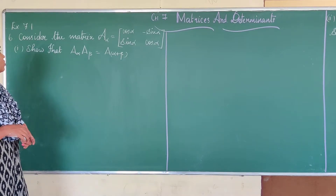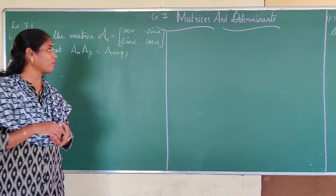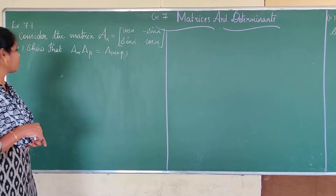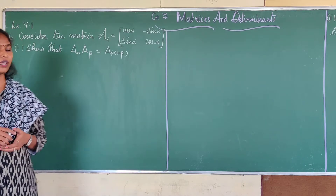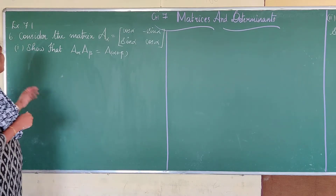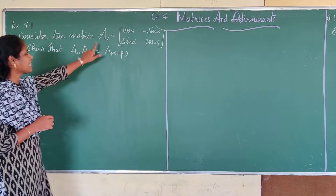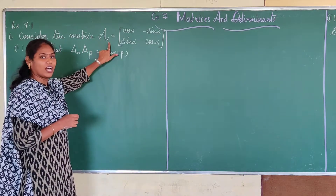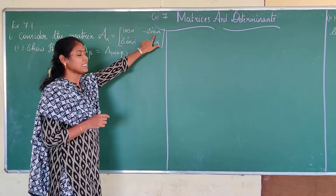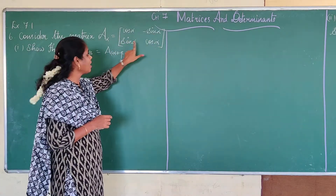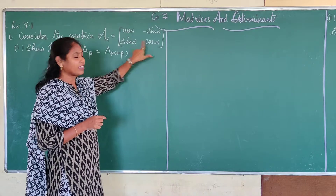Good morning students. Today we are going to see problem number 6, suffix 7.1. Consider the matrix A(α) equal to: cos α, minus sin α; sin α, cos α.